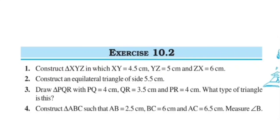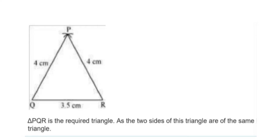Now see Question 3: Draw triangle PQR with PQ equal to 4 centimeters, QR equal to 3.5 centimeters, and PR equal to 4 centimeters. What type of triangle is this? See the steps: first draw a line segment QR of length 3.5 centimeters. Taking Q as center, draw an arc of 4 centimeter radius. Taking R as center, draw an arc of 4 centimeter radius to intersect the previous arc at point P. Join P to Q and P to R. As two sides PQ and PR are equal, triangle PQR is an isosceles triangle. Exercise 10.2 is now completed.